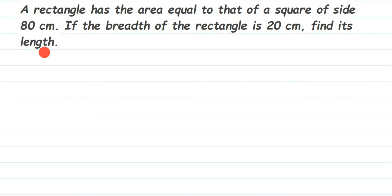They have given two things in the question. First, they have given a square of side 80 centimeter, and they have given that the rectangle has an area equal to that of the square, which means area of rectangle and area of square are same — they are equal. The side of the square is 80 centimeter and the breadth of the rectangle is 20 centimeter. They have not given the length, and that is what we are going to find out.